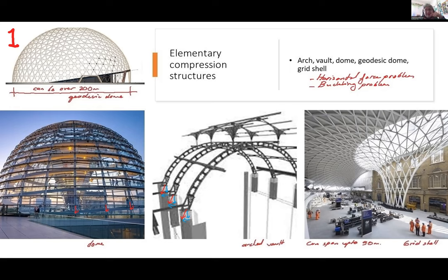At the top left you can see a geodesic dome — a very geometric structure with a texture formed by structural elements called icosahedrons. These structures can span over 200 meters and are very light circular structures, though they can also sit on a square plan. At the bottom right we have a grid shell — a newer structure that didn't exist when I was a student. It features a kind of regular geometry, very lightweight, usually formed by positive and negative curves, and can span up to 90 meters.